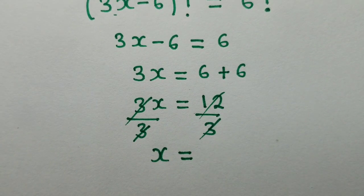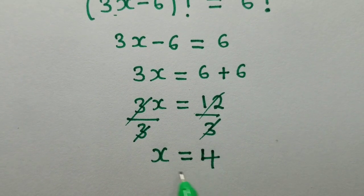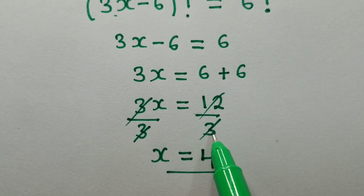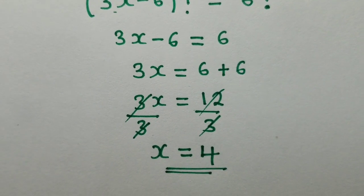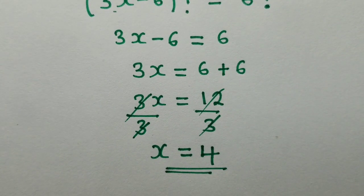So we shall remain with x equal to—here we're going to have 4, because we know that 3 into 3 is 1, into 12 is 4. So the value of x is equal to 4.